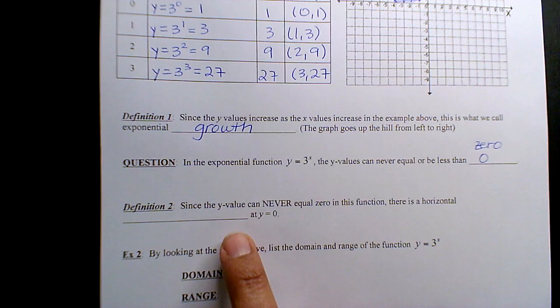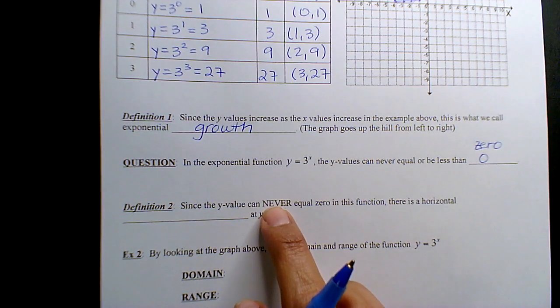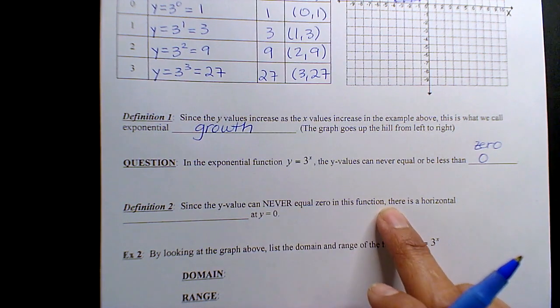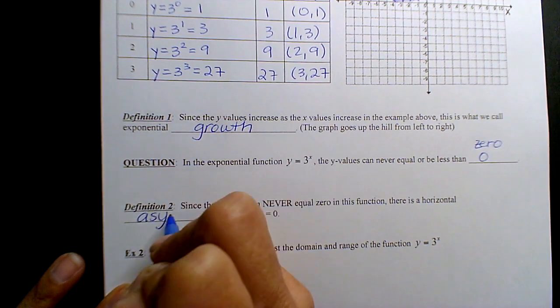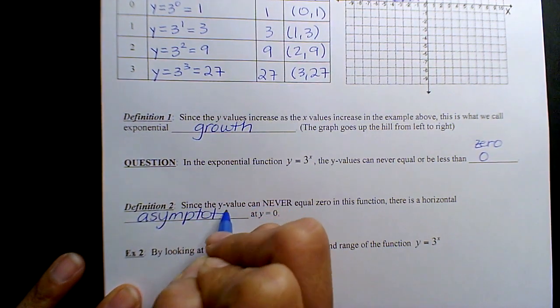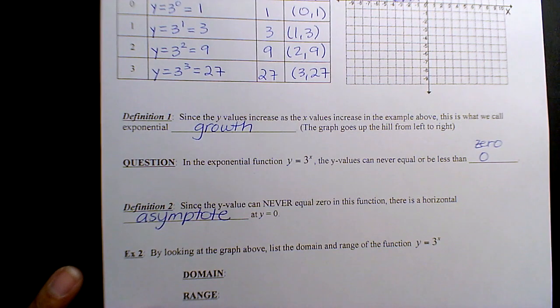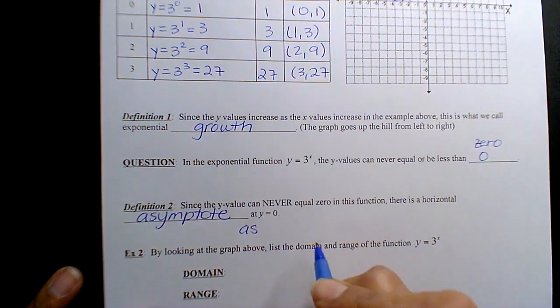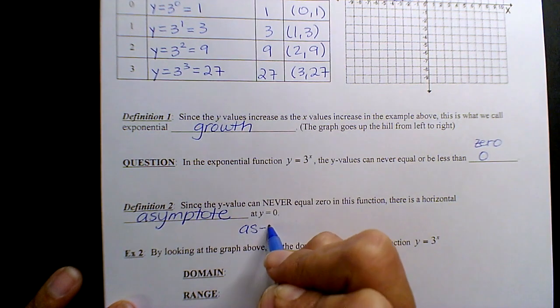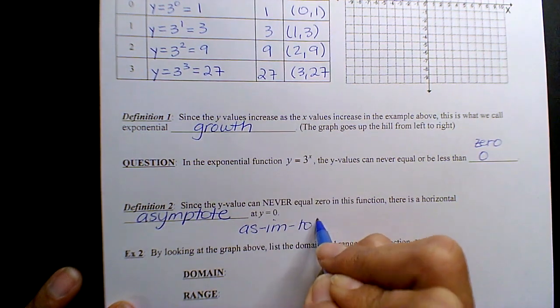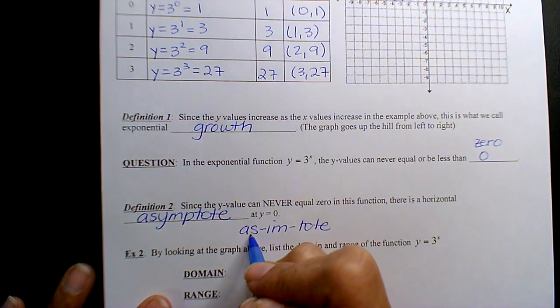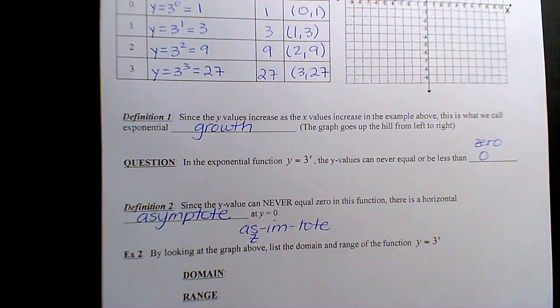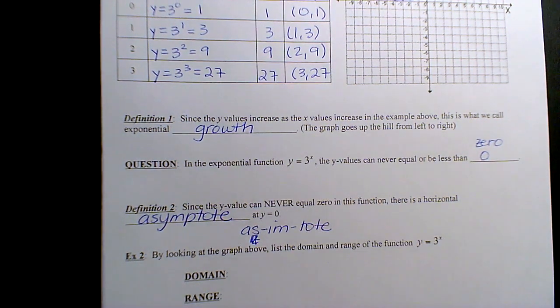Here's this one that's new to you. Since the y values can never equal 0 in this function, there is a horizontal asymptote. Have you guys heard that before? It's asymptote. You want to put two s's? Because it's like asymptote, really like two s's or like a z. Asymptote.